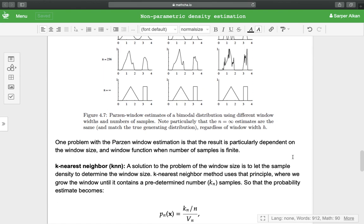One problem with the Parzen window estimation is that the result is particularly dependent on the window size, the number of samples, and window function when number of samples is finite. In the next video, we will discuss k-nearest-neighbor methods.